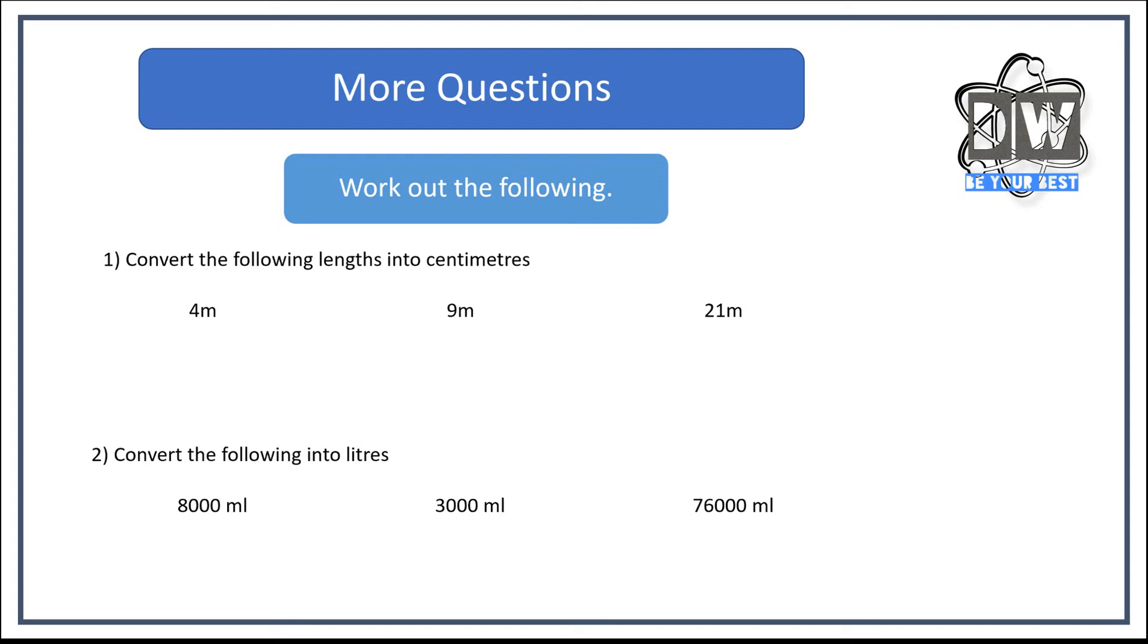Excellent. So you should have had enough time to do those now. So let's go up to the top ones. Convert the following lengths into centimeters. So 4 meters would equal 400 centimeters. 9 meters would equal 900 centimeters. And 21 meters would give you 2,100 centimeters.